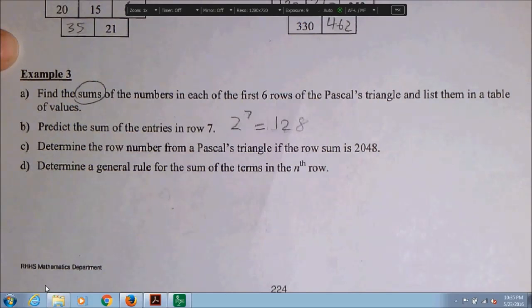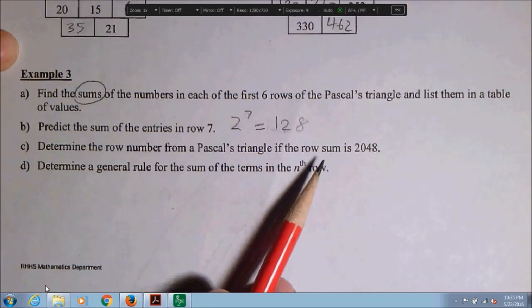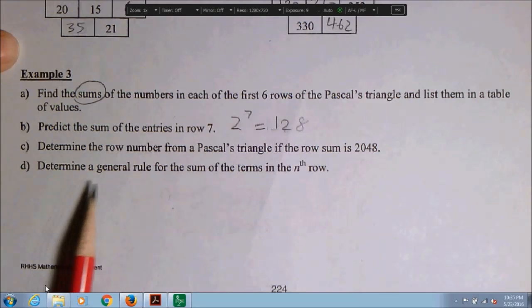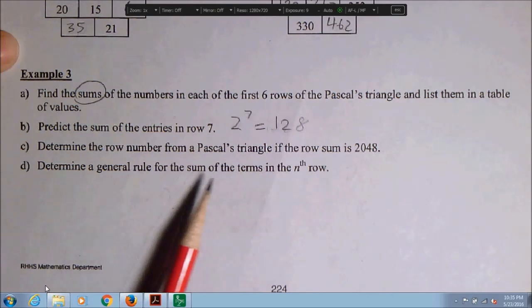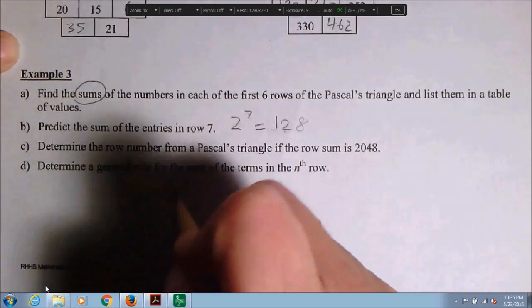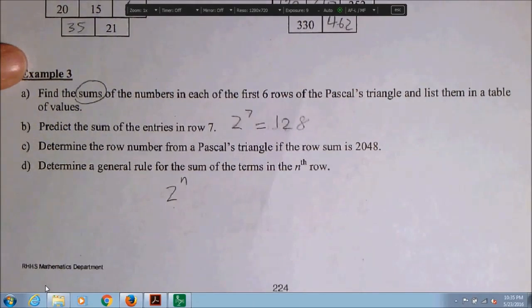Okay. Question C says, determine the row number from Pascal's triangle if the row sum is 2048. Well, this means we would have to know in general what is the sum of the rows. So I think we should do question D first. Determine a general rule for the sum of the terms in the nth row. Well, the sum of the terms of the nth row would be 2 to the n.